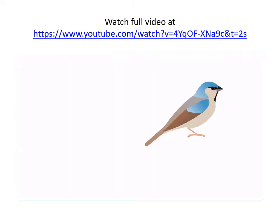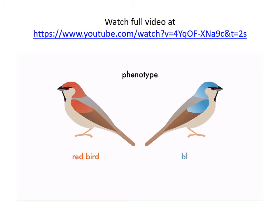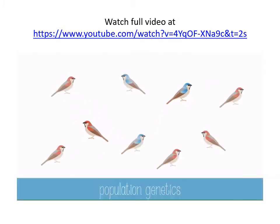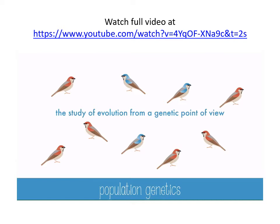In any population of a species, you'll see variations. The phenotype of these birds are red and blue. The genotype in this case is a big B for the red allele and a little b for the blue allele. Because red is dominant, red birds can be homozygous or heterozygous for the trait and still be red. Population genetics is the study of evolution from a genetic point of view. When evolution in a population occurs at the genetic level, it's sometimes called microevolution.